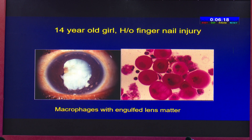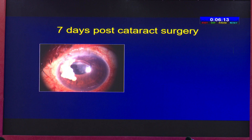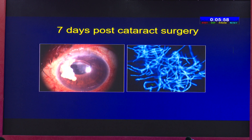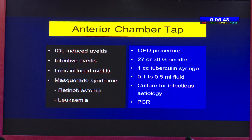Here you require only lens aspiration. This is seven days post-cataract surgery and you can see whitish lesions in the anterior chamber. Whether it's lens matter or infectious agents, you should do an anterior chamber TAP — this invasive test will provide the etiology. The calcofluor white stain showed a fungal ball. So anterior chamber TAP is required in lens-induced uveitis, infective uveitis where diagnosis is not achieved by non-invasive tests, and masquerade syndromes like retinoblastoma and leukemia.